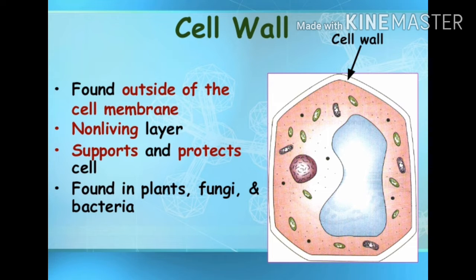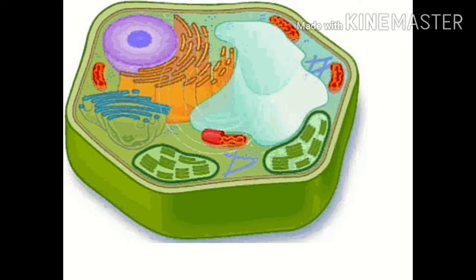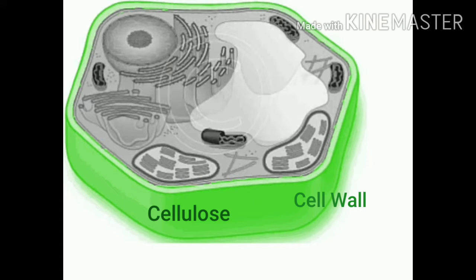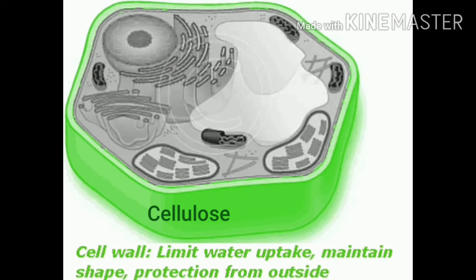Cell wall. It is a tough, non-living covering outside the plasma membrane. It is found only in plant cells and is freely permeable. It is mainly made up of cellulose, a complex substance that provides structural strength to the plants.